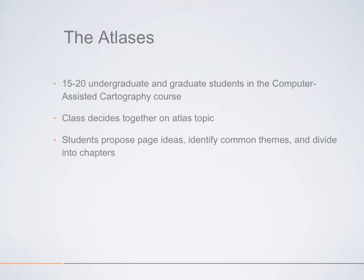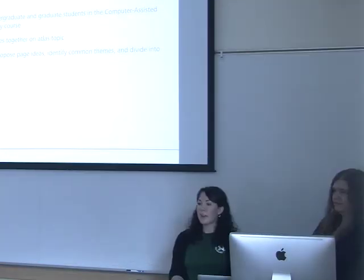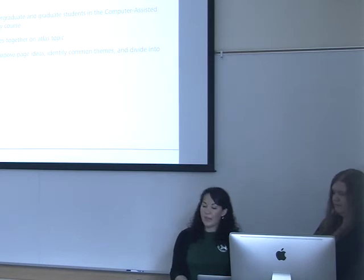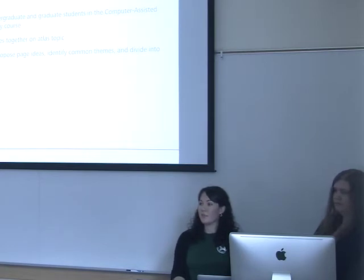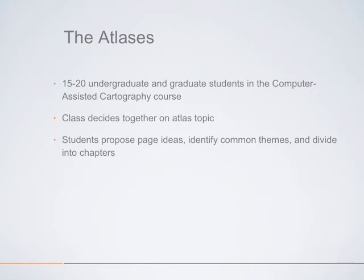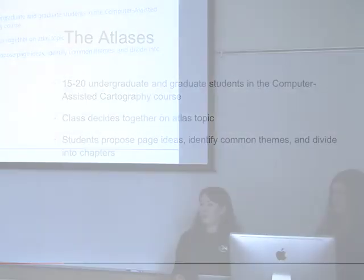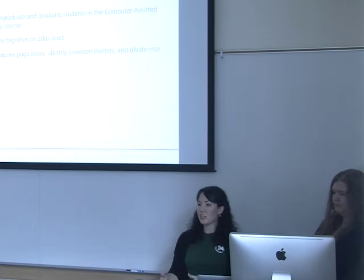The topic needs to be not too broad — so it remains cohesive — but also not so narrow that each person can't find something within it that interests them. It's done democratically: each person submits ideas and the class votes until a majority agrees on one topic. Throughout the term, students create about two or three pages each for the atlas, proposing ideas and receiving feedback from the TA and professor. Once pages are complete, common themes are identified to form the chapters.